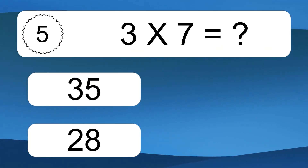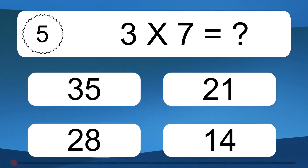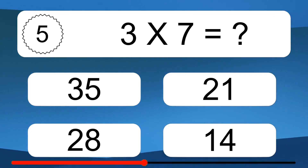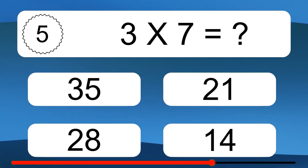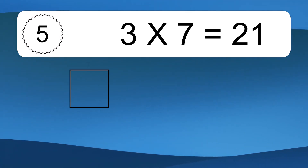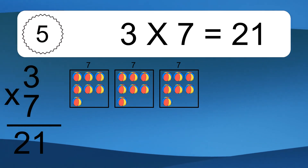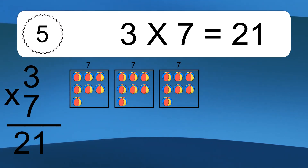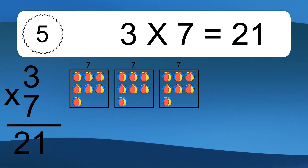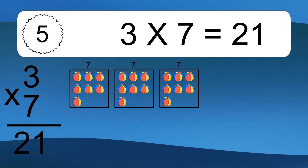3 times 7 equals what? 3 times 7 equals 21. We have 3 boxes, and each box has 7 colorful balls inside. If you count all the balls in all the boxes together, you will have 3 times 7 balls. This equals 21 balls.